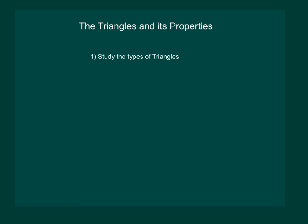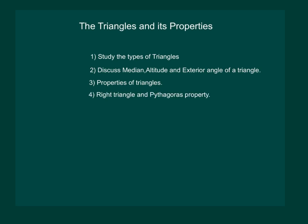We shall start with the study of the types of triangles. Then we shall discuss median, altitude and the exterior angle of a triangle. Then we shall state properties of triangles and finally we shall discuss right triangle and its Pythagoras property.